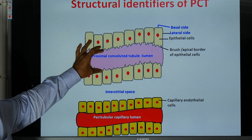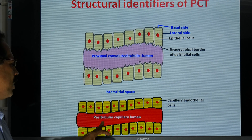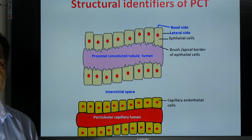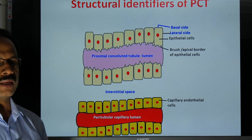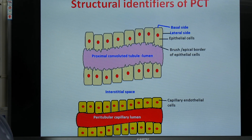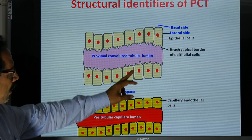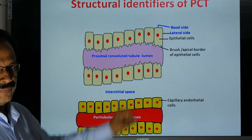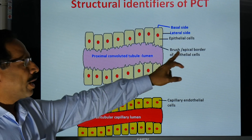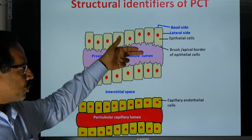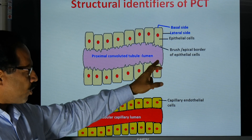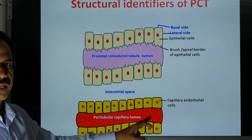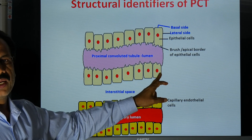This is the cross section of the proximal convoluted tubule, and this is the cross section of the tubular capillary lumen. The proximal convoluted tubule wall is made up of a single layer of epithelial cells. In the proximal convoluted tubule, the side of the cell facing the tubule has microvilli. That side is called the brush border or apical border, through which reabsorption from the fluid happens. The side facing the capillary is called the basal side, and the other two sides are called the lateral side.